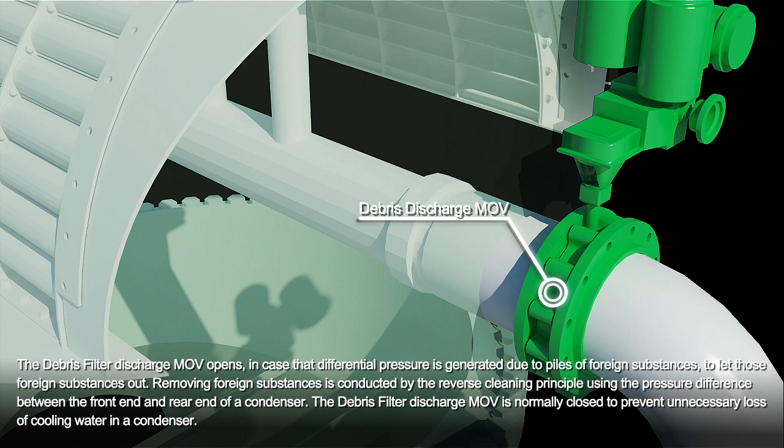Removing foreign substances is conducted by the reverse cleaning principle using the pressure difference between the front end and rear end of a condenser. The debris filter discharge MOV is normally closed to prevent unnecessary loss of cooling water in a condenser.